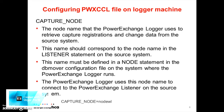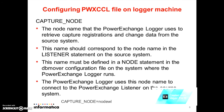PWXCCL configuration — configuring the PWXCCL file on the logger machine. The capture node parameter is a must; it has to be included in the PWXCCL file for remote logging. The CCT file will be stored in the source system, that is on the listener machine. The node name that the logger uses to retrieve capture registrations and change data is called the capture node. This name should correspond to the node name in the listener statement on the source system and must be defined in the logger's DBMover file. The logger uses the capture node name to connect to the listener on the source system.